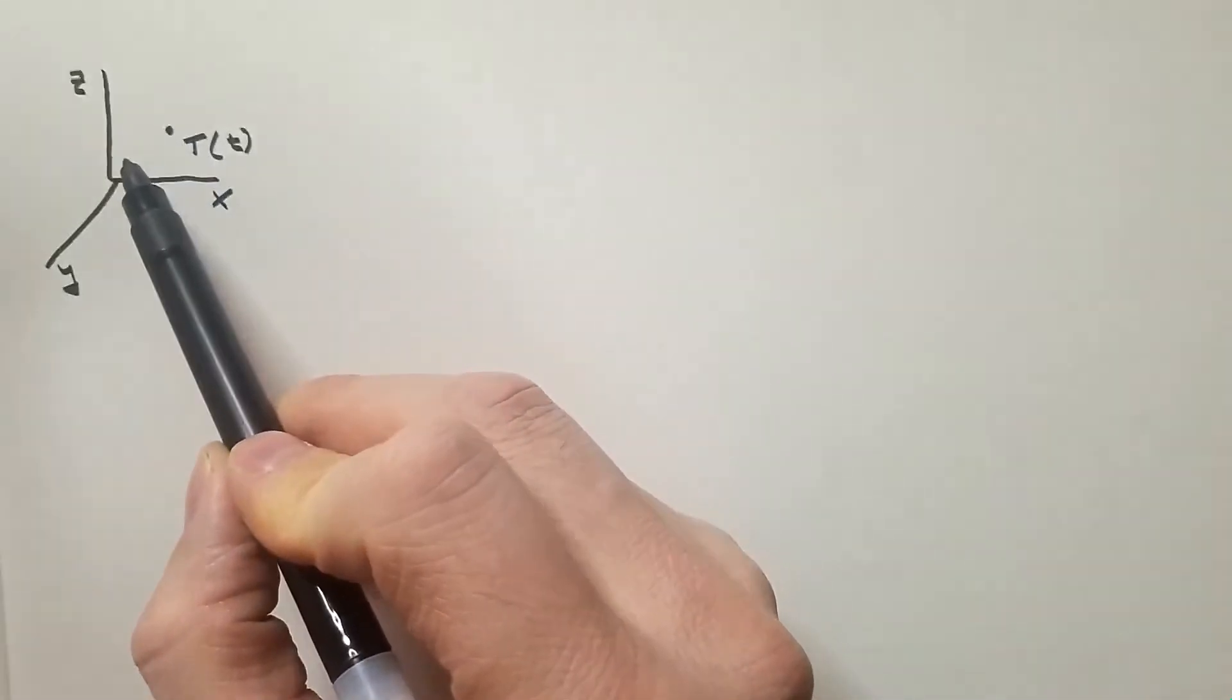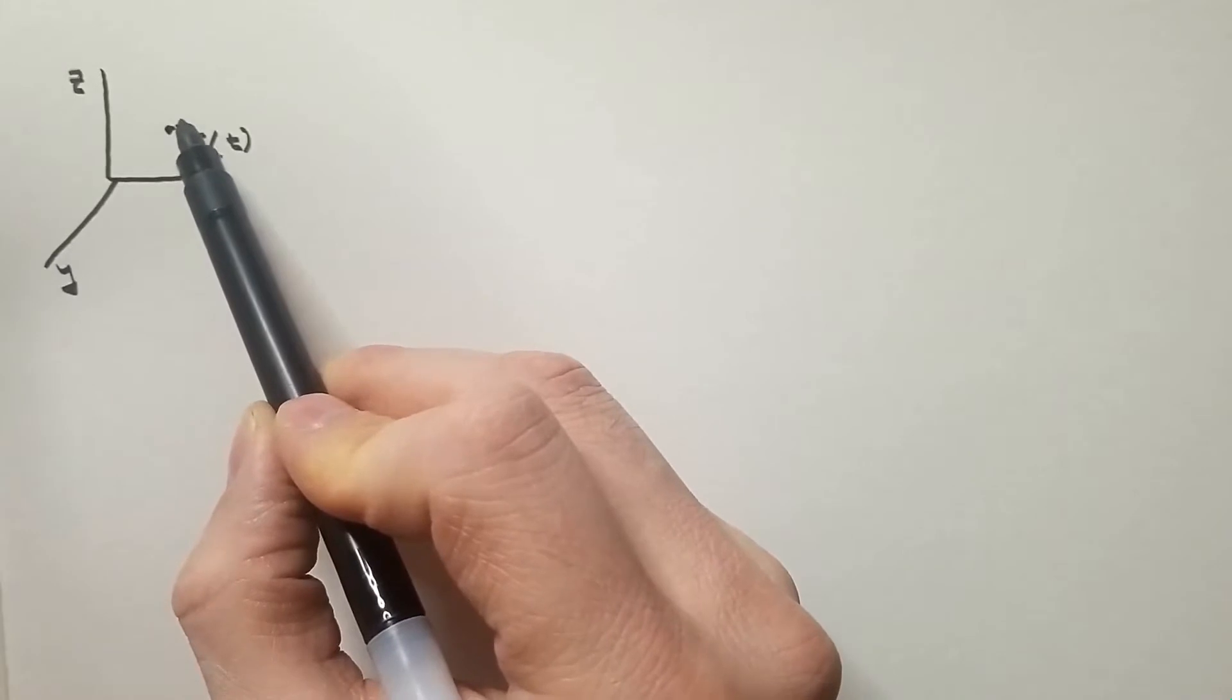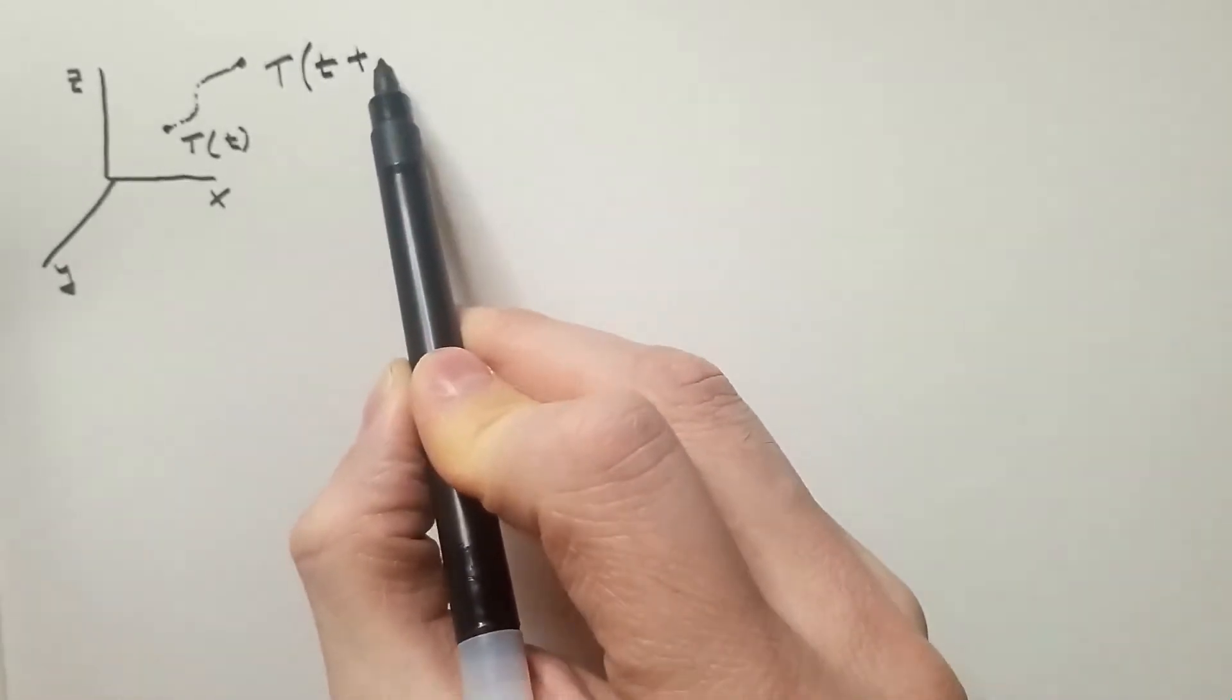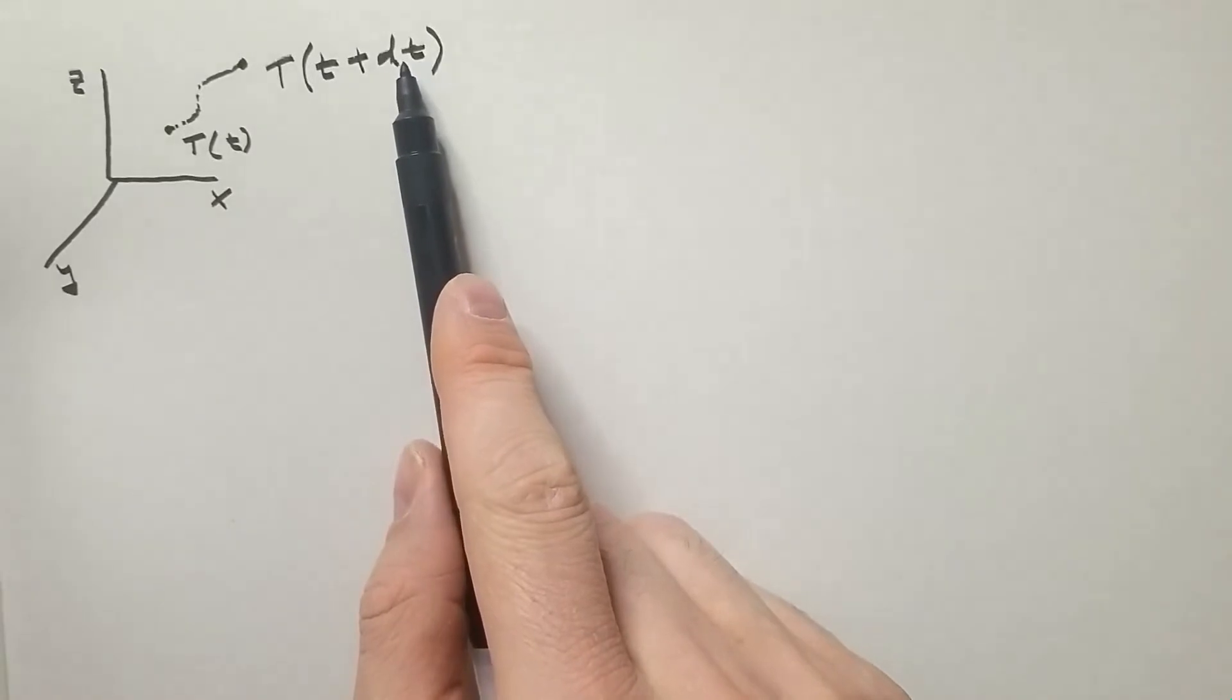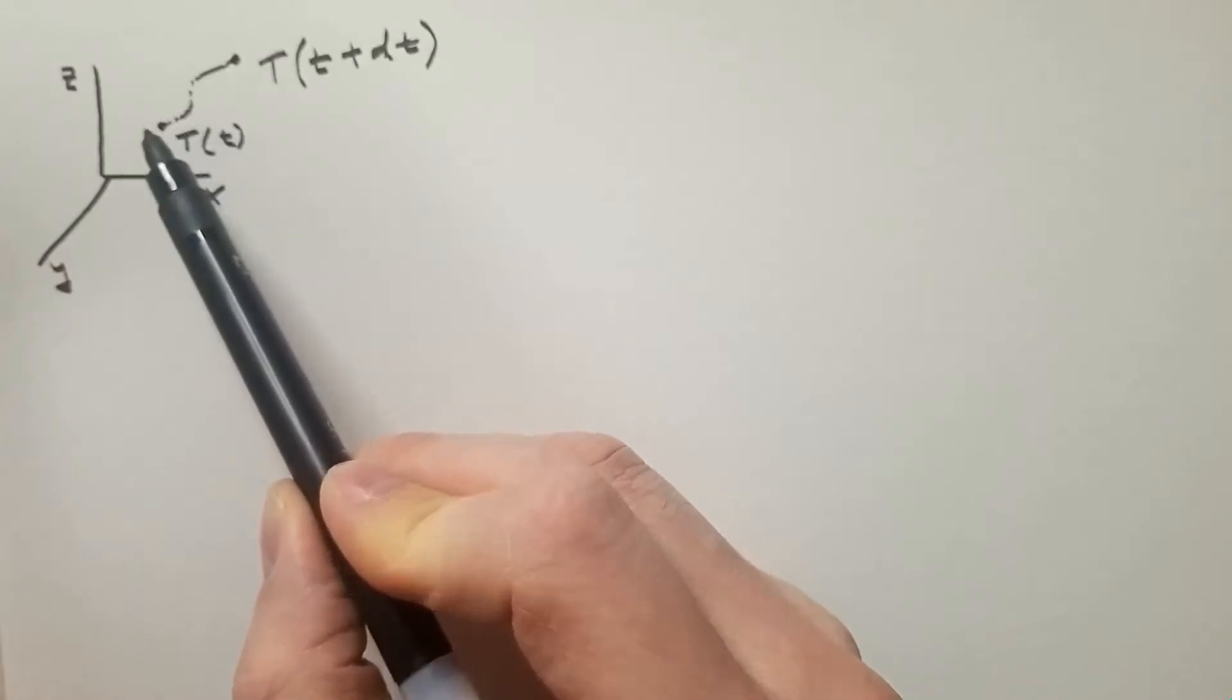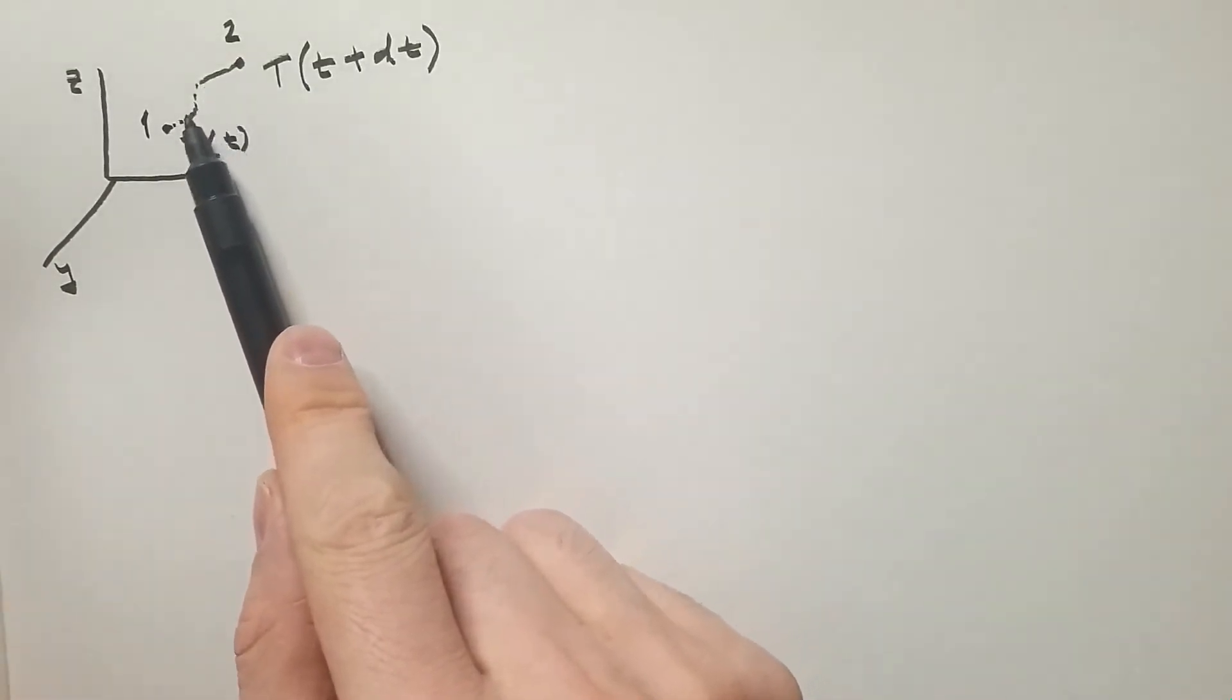But now if we switch to Lagrangian frame of reference, then there is some particle or air parcel coming to this point and then passing and then I follow that particle. And let's say that particle or air parcel finds itself here and it has temperature T at time T plus dT, where dT is infinitesimally small increment in time. Now, please remember that as we are moving with this particle, let's say from point 1 to point 2, the coordinates of this particle are changing with time.